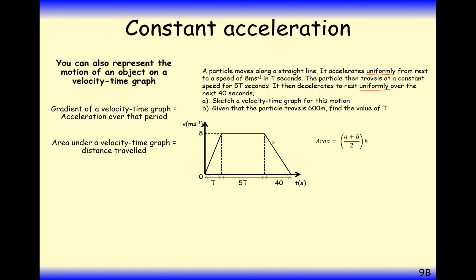What we'll do is we'll either split it into two triangles and a rectangle, or you can use the area of a trapezium formula here. So a is the top part, b is the bottom part, h is the height. So it's 5t on the top, height of 8, and a base of 6t plus 40. Sub that all into your formula, and you know the area of this shape underneath here is going to be 600, because that's the distance traveled.